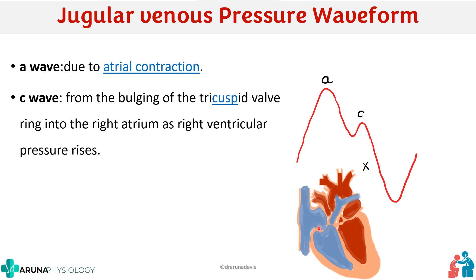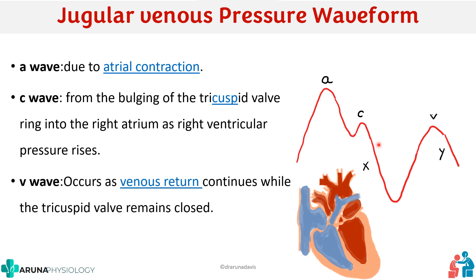Before the tricuspid valve opens, as right ventricular pressure increases, the cusp bulges into the right atrium, increasing pressure there — seen as the positive C wave deflection. The next positive deflection is the V wave, which occurs as venous return continues while the tricuspid valve remains closed, causing another pressure increase depicted by the V wave. To remember: A for atrial contraction, C for bulging of the cusp, and V for venous return.